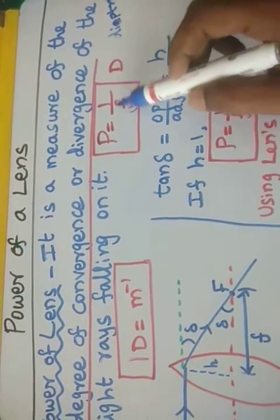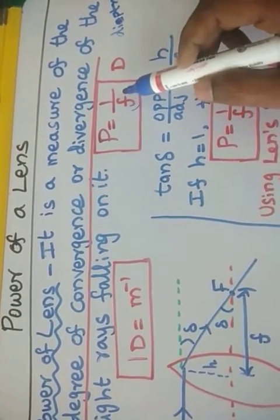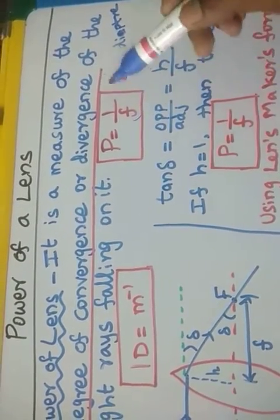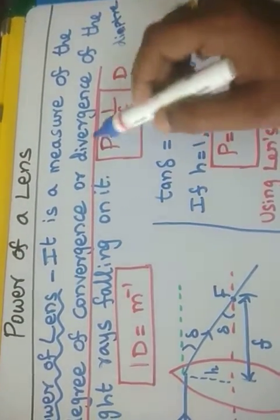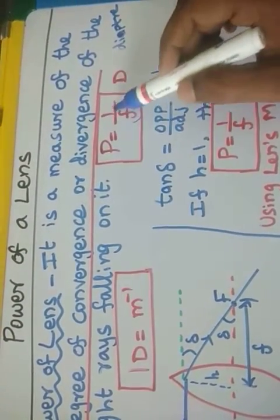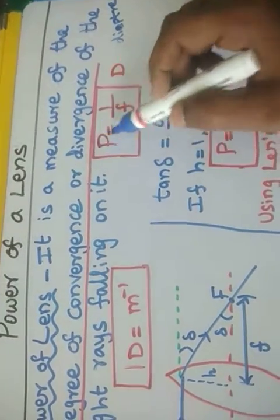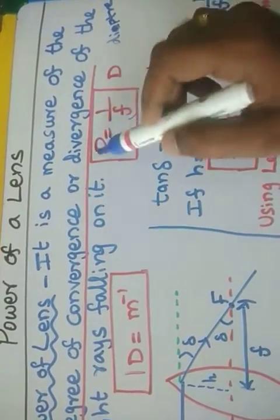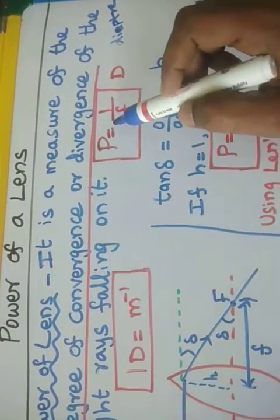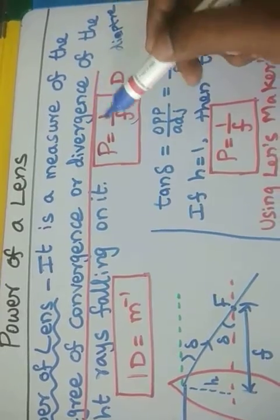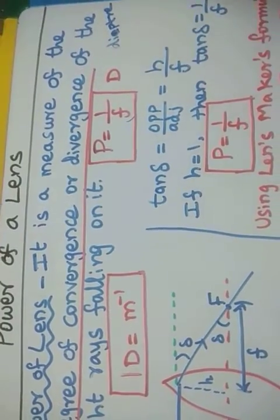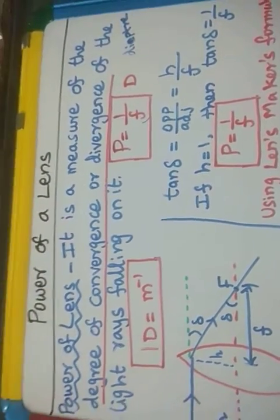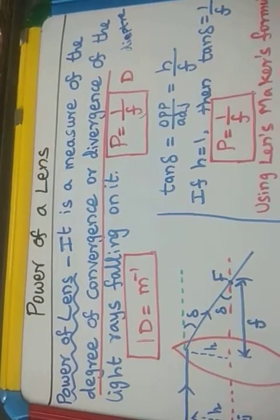If the focal length is very, very small, what will happen? It will bend more — that means the power will be higher. So focal length smaller means the power will become higher because it is inversely proportional, and hence the ability of bending will be more. That is the power of a lens.